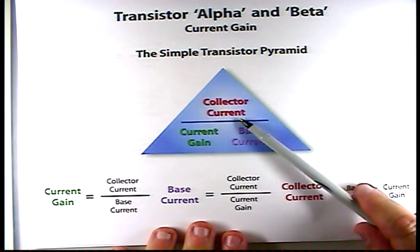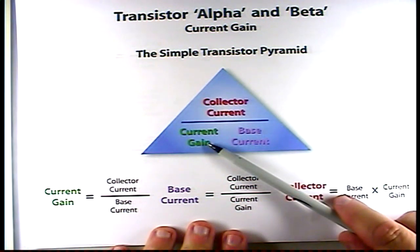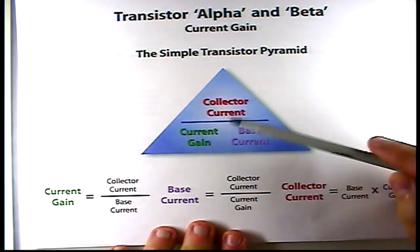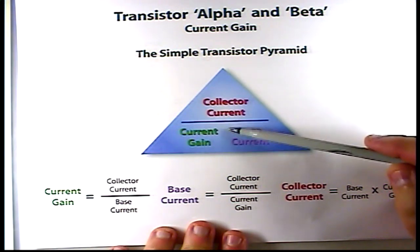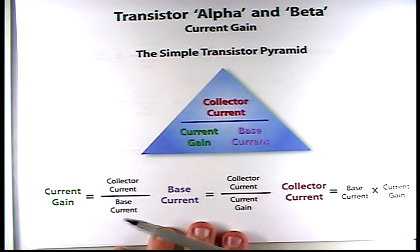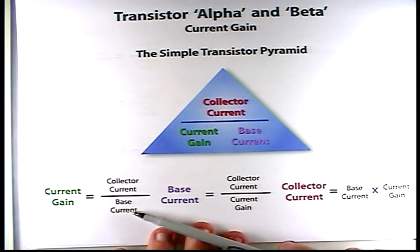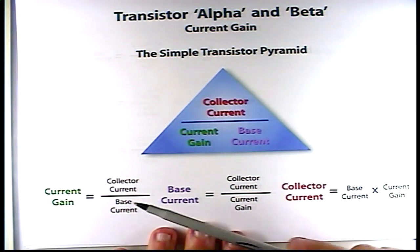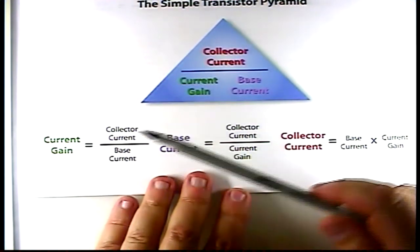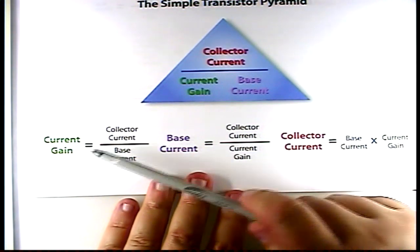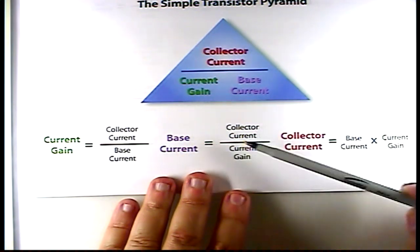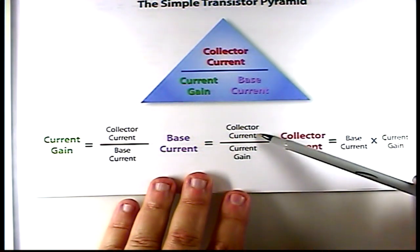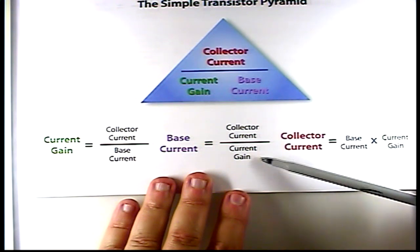What we have is the collector current is at the top of the triangle, and then the current gain and the base current is at the bottom, and we'll have an imaginary line drawn here. Basically, the current gain is equivalent to the collector current over the base current. The base current is equivalent to the collector current over current gain.